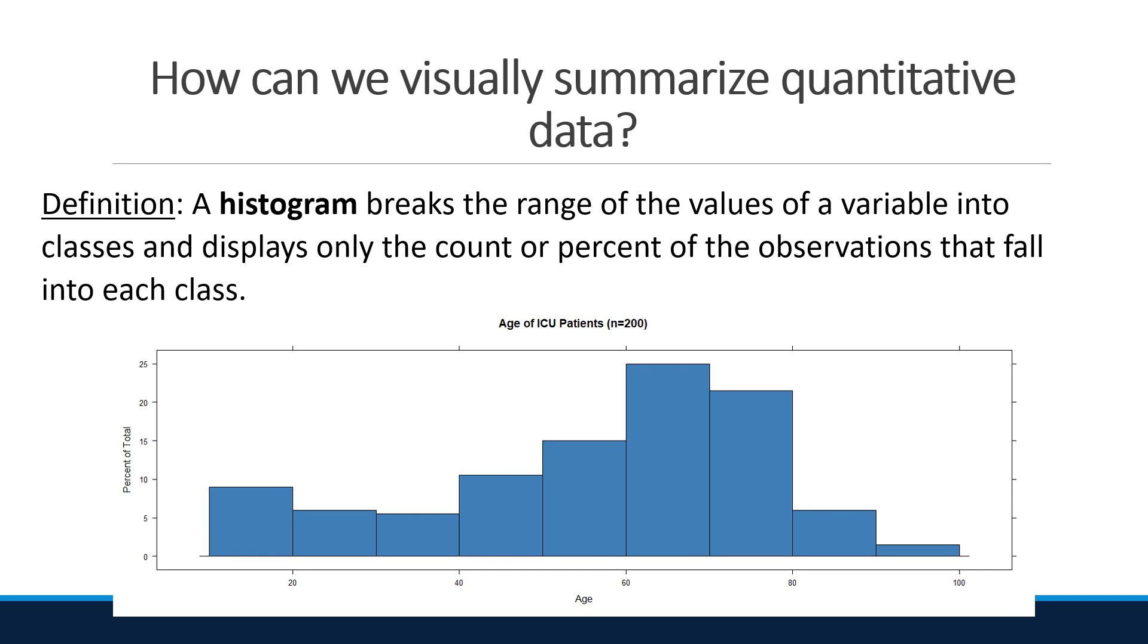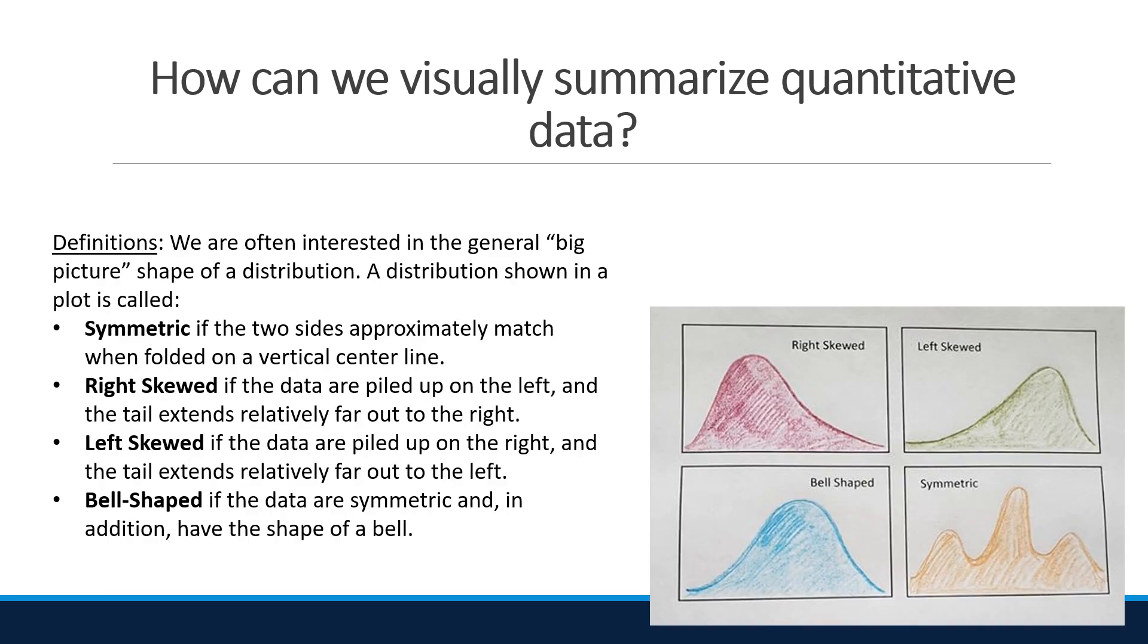Additionally, we want to be able to describe the shape of the data. This is the same as the shape of the distribution. We are often interested in the general big picture shape of a distribution. A distribution shown in the plot is called symmetric if the two sides approximately match when folded on a vertical center line.